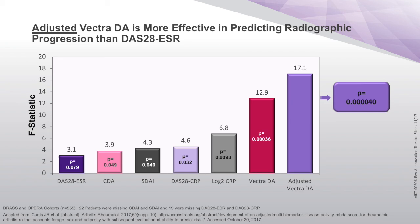As you can see, here is the MBDA in its classic form. We've known for the first several years of this test that it was the best predictor of radiographic progression of all the markers available in our practice. And here is the adjusted MBDA, which at a high level of statistical significance suggests that this has done exactly what it was intended to do. It is a better predictor of what we are trying to avoid — radiographic progression.